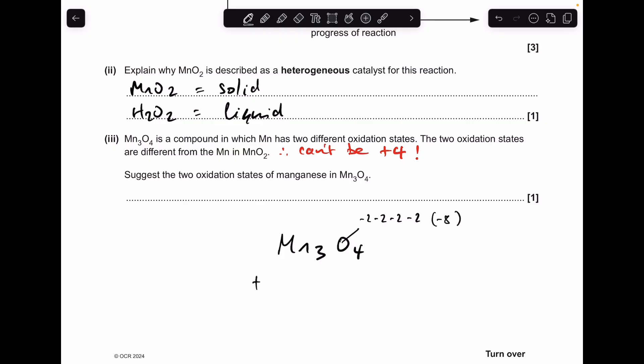Or you could have two +3s, that's +6, and then a +2, and that gives you +8 as well. So either +1 and +6, or +2 and +3.